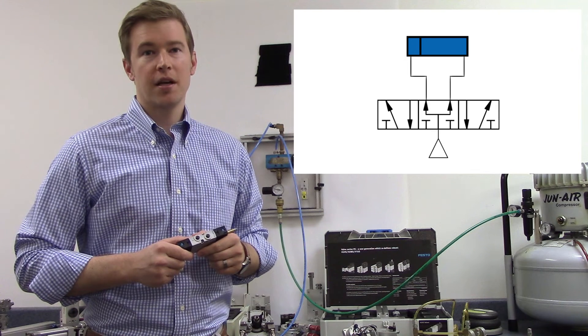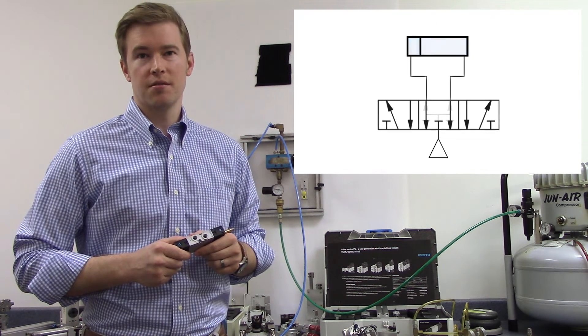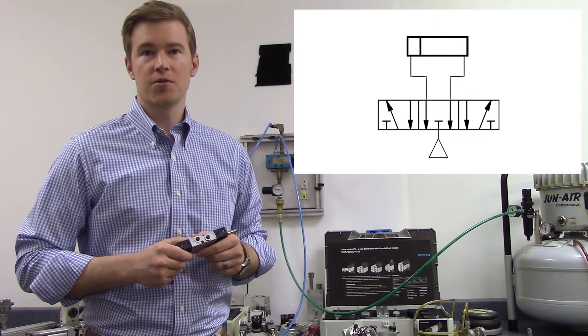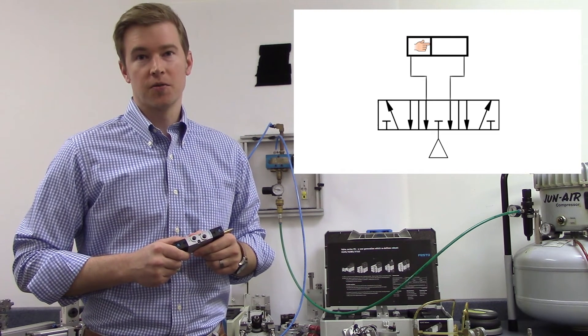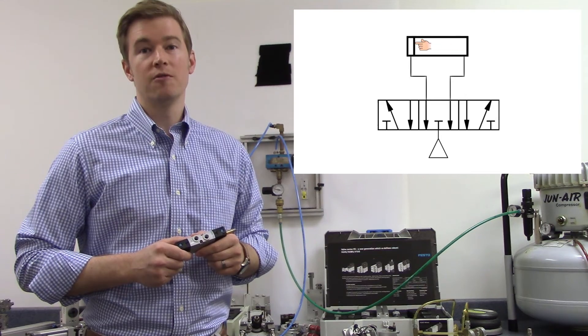Yet another case is the middle position exhausted, where the working lines and the two exhaust ports are left open, so all air is purged from the actuator. This is useful in cases where the actuator needs to be moved by hand.